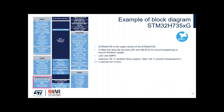A block diagram highlights the cache on chip: 32 KB plus 32 KB of instruction plus data cache, which allows use of both embedded and external memories. Two instances of OctalSPI are available, meaning you can connect one to an external NOR flash and the other to an external OctalRAM, for example.